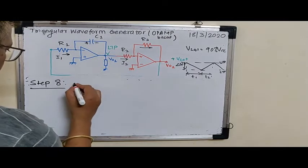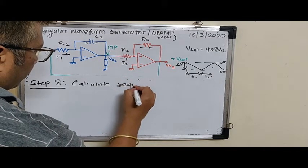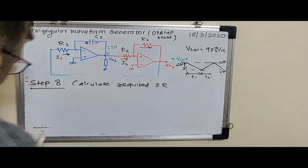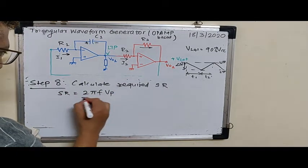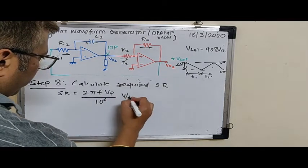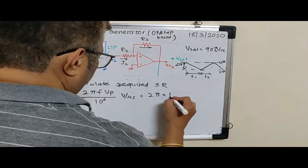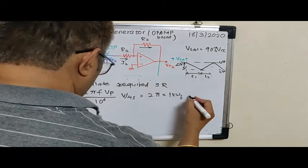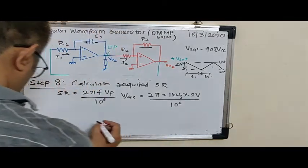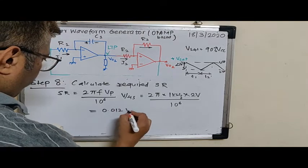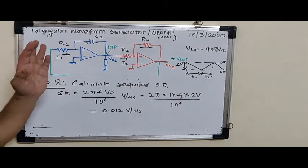Step 8. Calculate required slew rate. Slew rate, all of you know, is given as 2πF Vp divided by 10 to the power 6. So that turns out to be 2 into π into frequency is 1 kilohertz and peak value is 2 volts divided by 10 to the power 6. And this happens to be equal to 0.012 volts per microsecond.